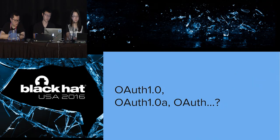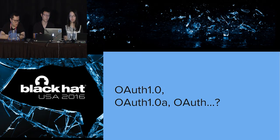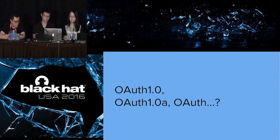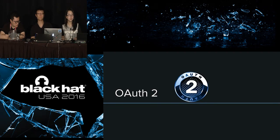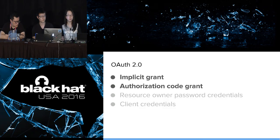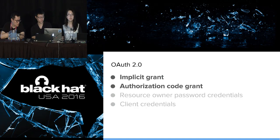From a developer's point of view, OAuth 1 is very complicated — lots of redirections and requires knowledge of cryptography. If you want to use OAuth for authorization, the answer is: don't use OAuth 1. There is a more simplified version called OAuth 2, which solved some problems, but OAuth 2 still has many security vulnerabilities. We'll be focusing on the two common flows for OAuth 2.0: implicit grant flow and authorization code flow. These two flows are very different — think of them as two different versions of OAuth 2.0.